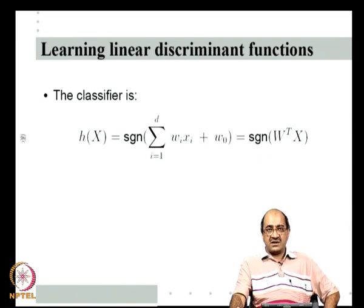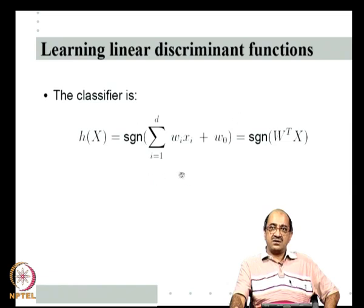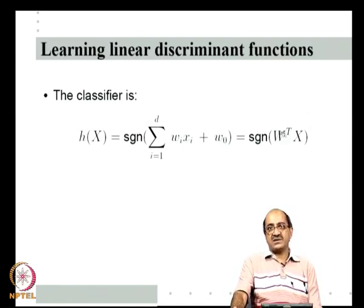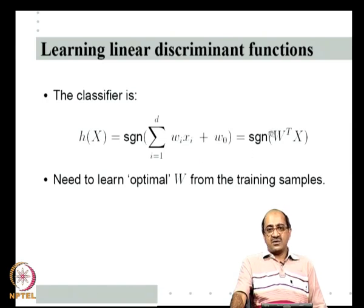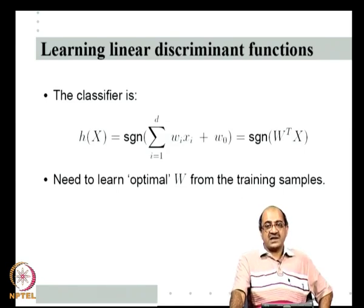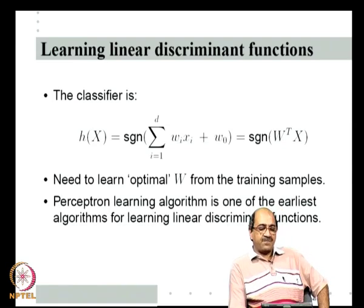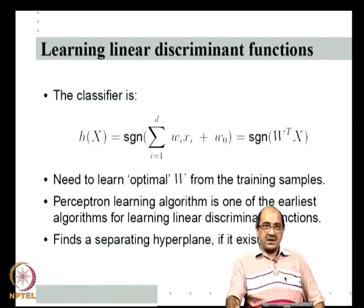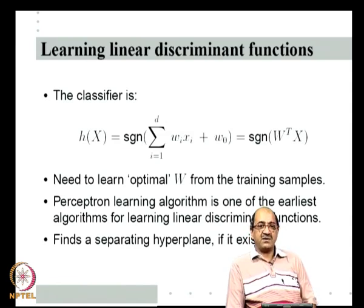So what is learning of linear discriminant functions? The classifier is h(x) = sign(w^T x). We have to learn the optimal values of w from the training samples. There are many algorithms; we will start with one of the oldest—arguably the first pattern recognition or machine learning algorithm—called the perceptron algorithm. The perceptron learning algorithm is one of the earliest algorithms for learning linear discriminant functions. It can find a separating hyperplane if it exists, so it works only if the pattern set is linearly separable. Later we will see how to handle patterns that are not linearly separable.